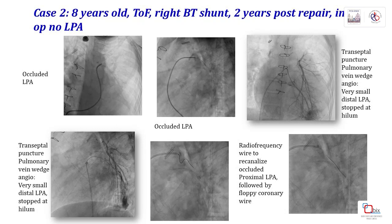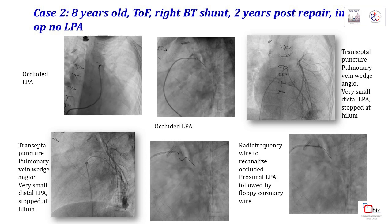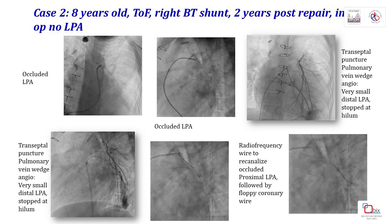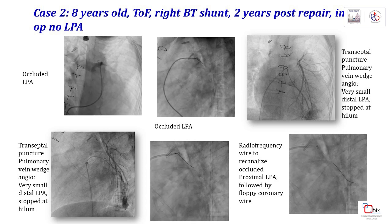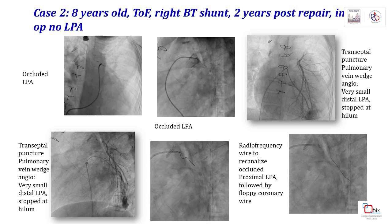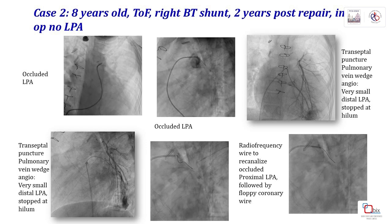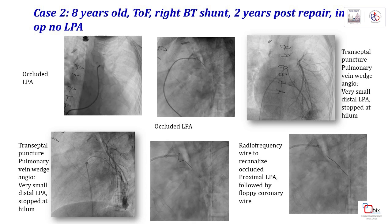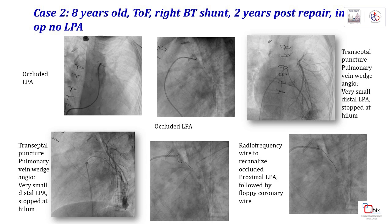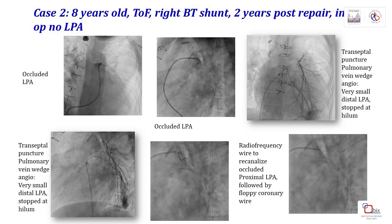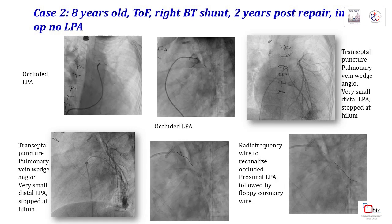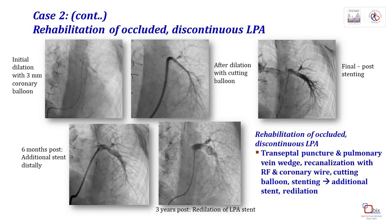The second case is a patient referred to us at age 8 with tetralogy of Fallot repaired earlier, where at surgery the surgeon could not find the left pulmonary artery. The preliminary angiogram showed an occluded LPA. Attempts at recanalization with a coronary wire were unsuccessful. Following a transseptal puncture, a pulmonary vein angiogram opacified the left pulmonary arteries, which were very small. We finally managed to recanalize the occluded LPA with an RF wire, exchanged for a small coronary wire. Initial dilation used a 3 mm coronary balloon, followed by pre-dilation with a cutting balloon, with the final result showing LPA stenting achieved.